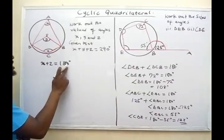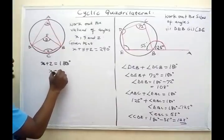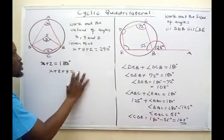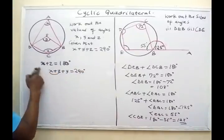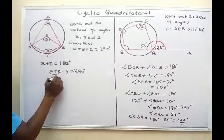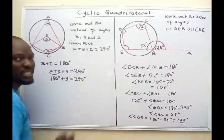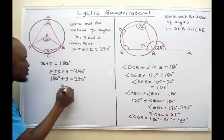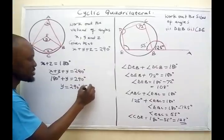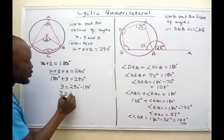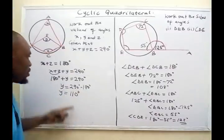So I can plug in 180 degrees for X plus Z. Writing: X plus Z plus Y equals 290 degrees, and substituting 180 degrees for X plus Z gives: 180 degrees plus Y equals 290 degrees. To get the value of Y, I take 290 degrees minus 180 degrees, which gives Y equals 110 degrees.